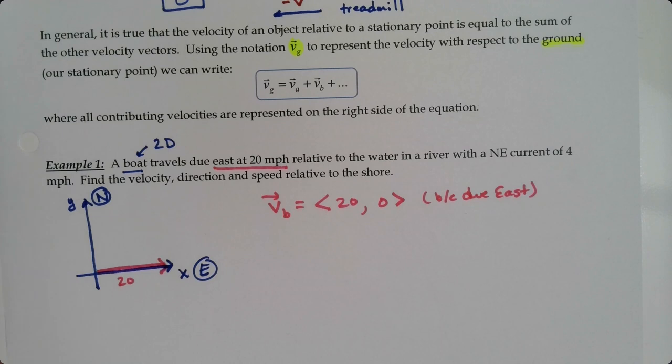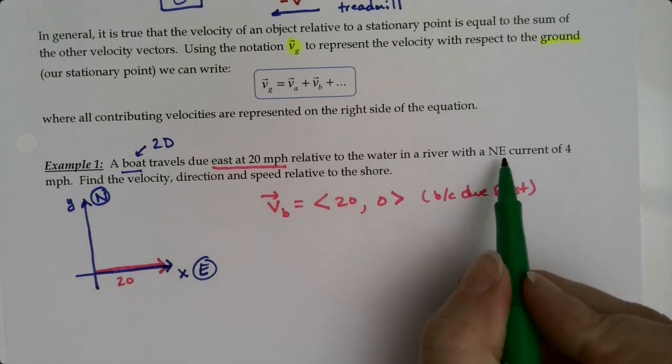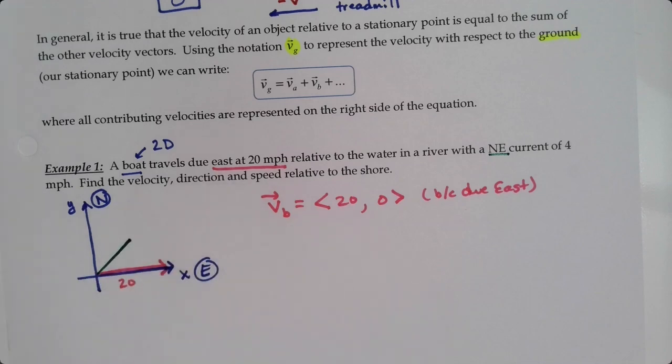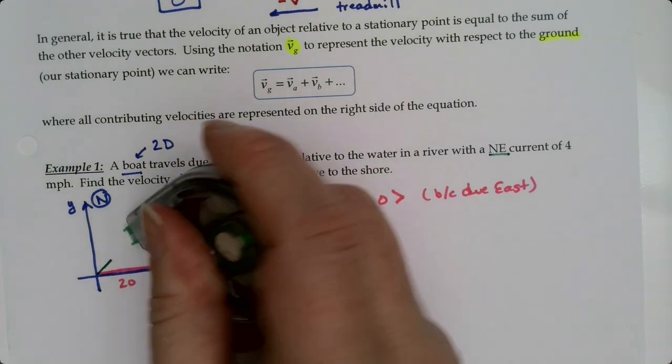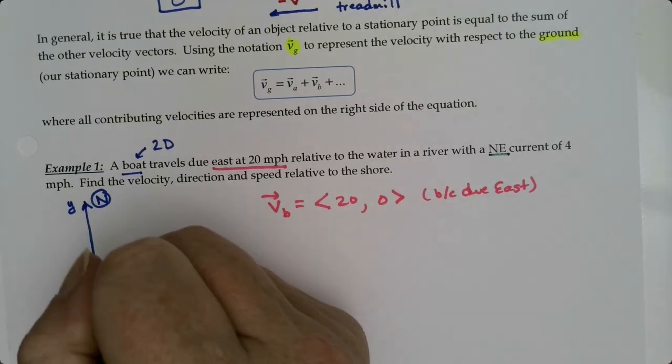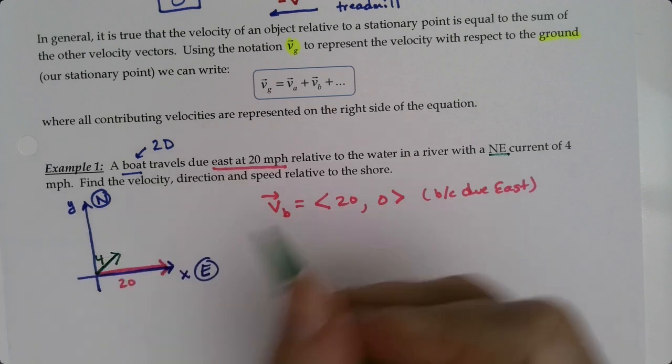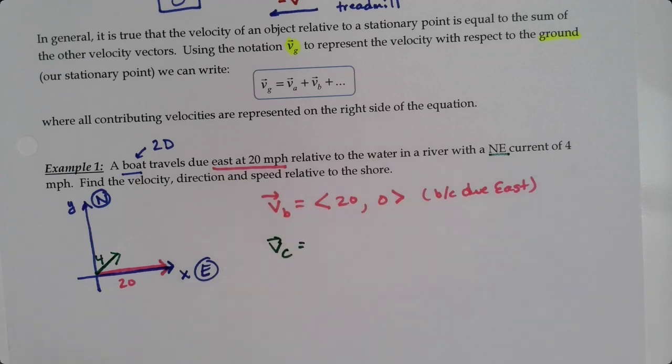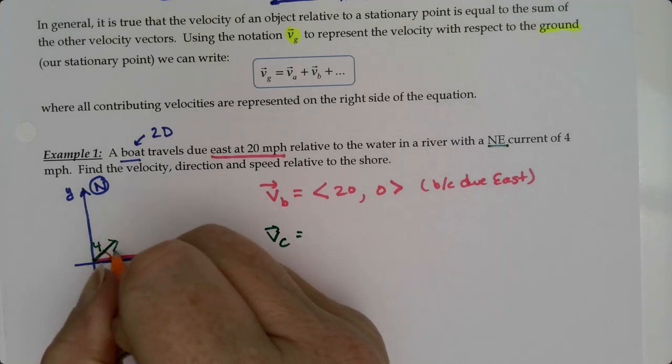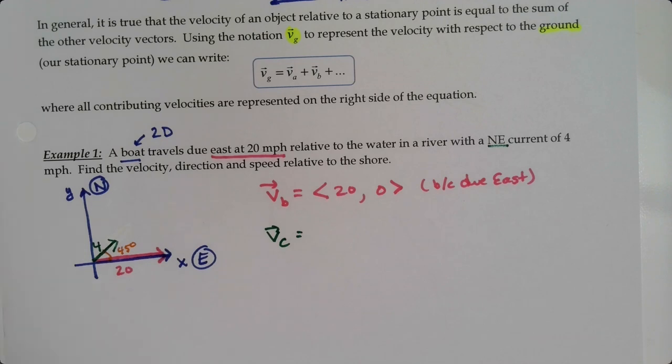But there's a cross current. The cross current is northeast, so that would be a 45-degree angle, and it has a magnitude of 4. That's the northeast direction. So the velocity for the current, this angle right here is 45 degrees.